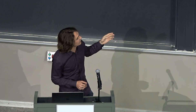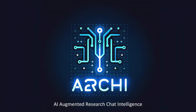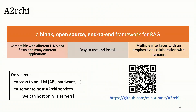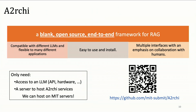This motivated us to build Archie — AI Augmented Research Chat Intelligence — an open source end-to-end tool for RAG. We have three pillars: we built it to be compatible with many different large language models and flexible to many different applications; easy to use and for admins to install; and with many interfaces emphasizing working together with humans instead of just giving them answers. We're a fully open source project.